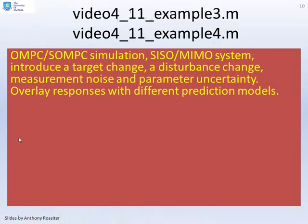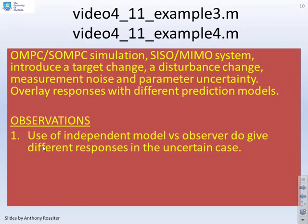However, they do both work. So the key observations, if we use an independent model or an observer, they get different responses. And this is the key thing, different responses in the uncertain case.